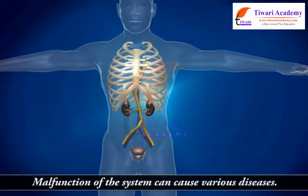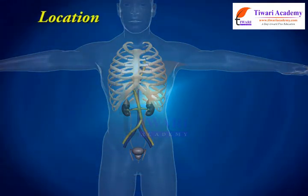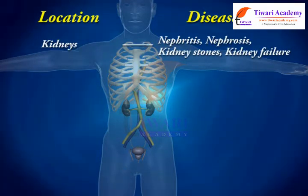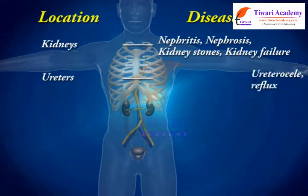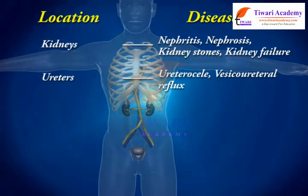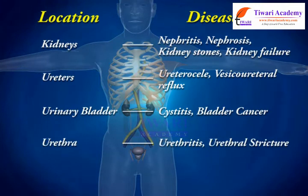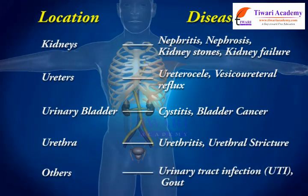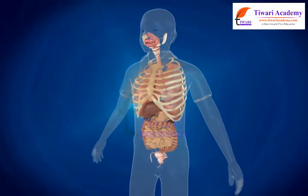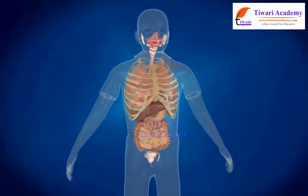Malfunction of the system can cause various diseases, some of which include kidney diseases: nephritis, nephrosis, kidney stones, and kidney failure. In the ureters: vesicoureteral reflux. In the urinary bladder: urinary tract infection (UTI). Other conditions include gout. These are all the malfunctions occurring in the excretory or renal system.